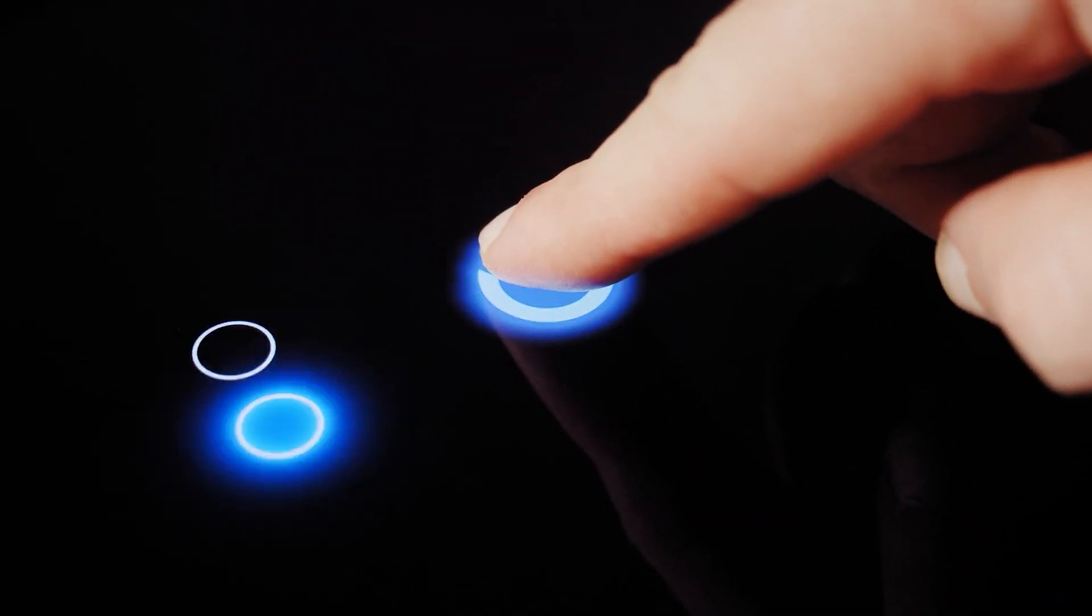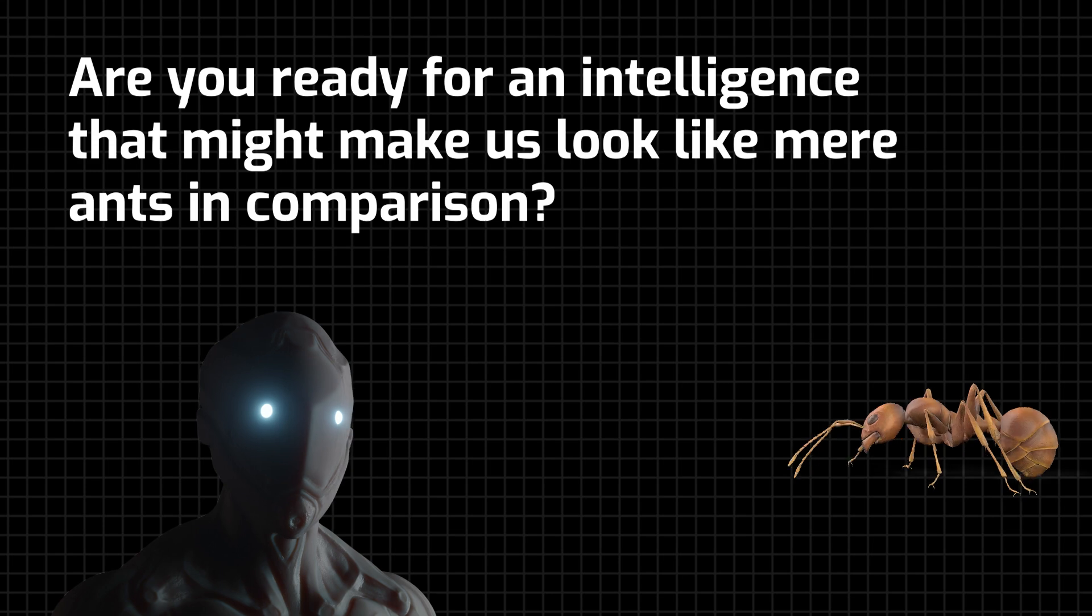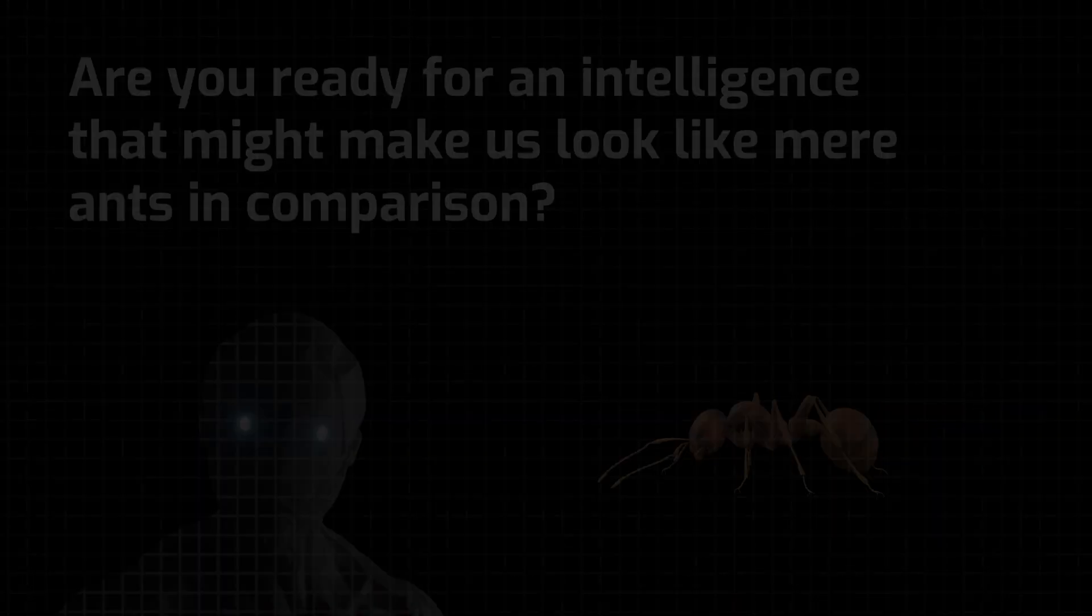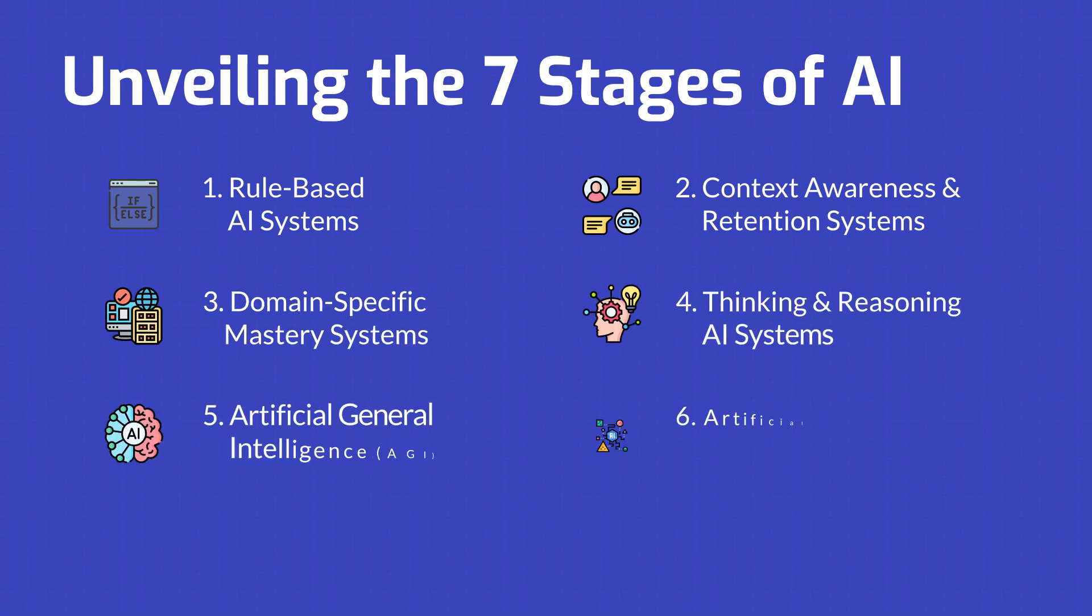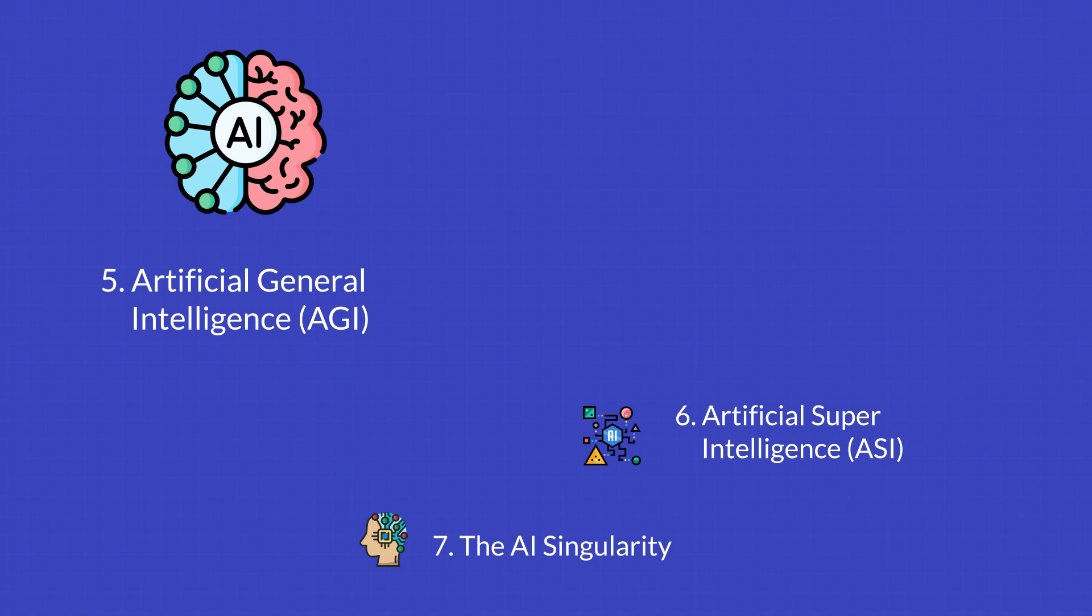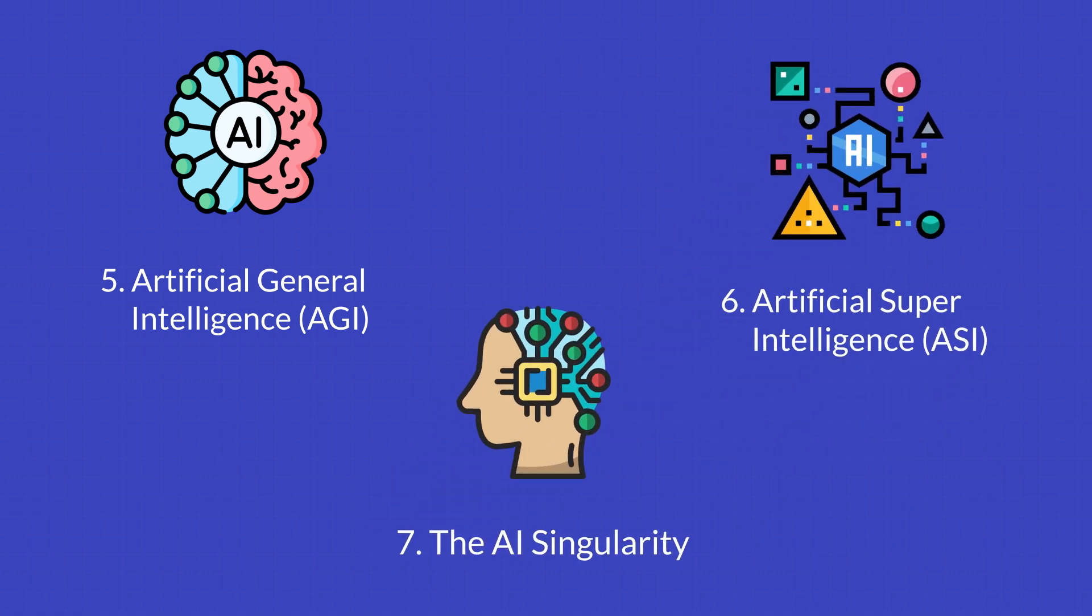These three foundational stages have paved the way for the future, but are you ready for an intelligence that might make us look like mere ants in comparison? We're talking about the seven intriguing and potentially scary stages of AI, especially AGI, ASI, and the chilling concept of singularity.